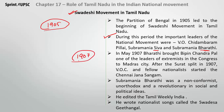In 1907, Tilak Saheb and other leaders were invited to Madras City. Tilak was a famous extremist leader. After the Surat Split in 1907, the Congress Party was divided into extremists and moderates. V.O.C. and their fellow nationalists formed the Chennai Gana Sangam. Whatever happened at the national level, you can see its effect here in Tamil Nadu.